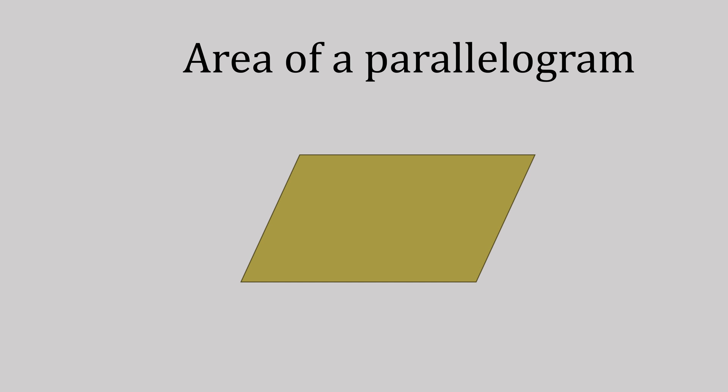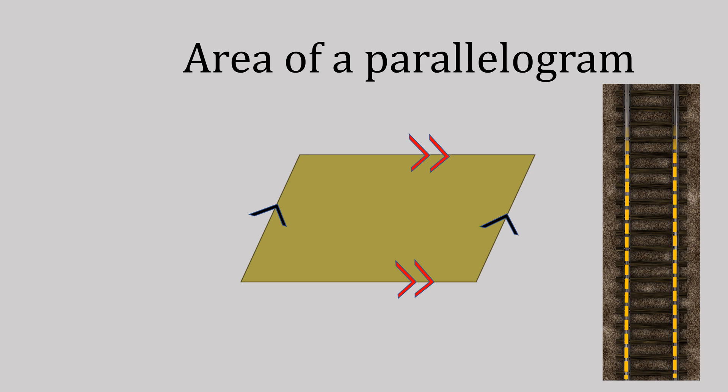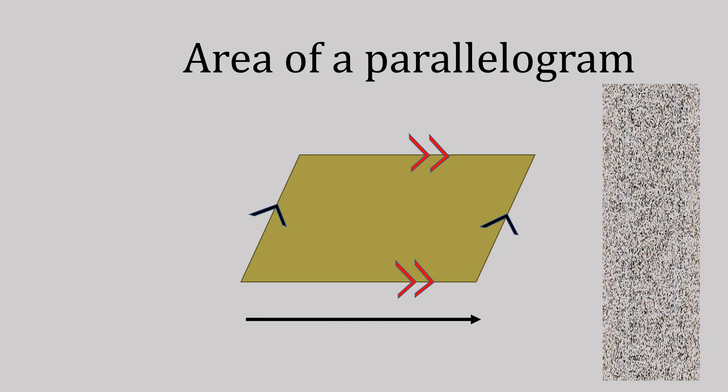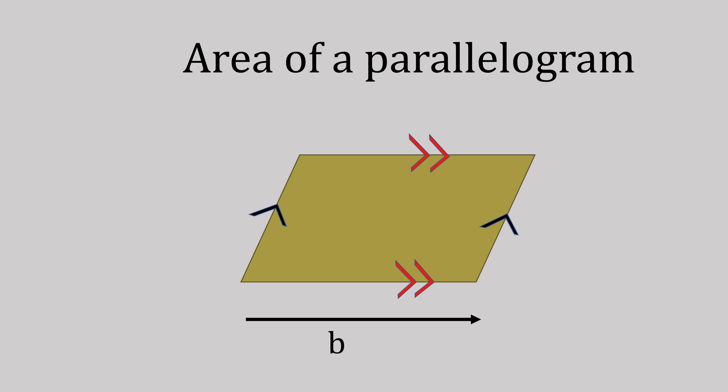Now, area of a parallelogram. This is like a rectangle that's been pushed over and it has two sides of parallel lines, which means they will never meet, a bit like train tracks. Therefore, our formula is the same as a rectangle.